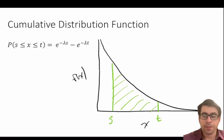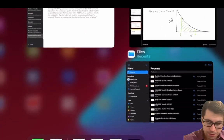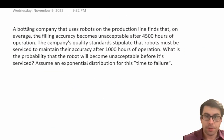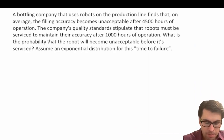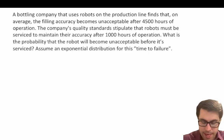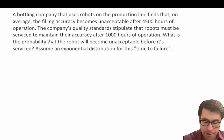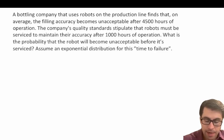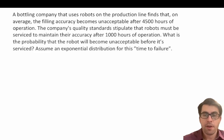The best way to learn is by doing practice problems, so let's dive in. A bottling company that uses robots on the production line finds that, on average, the filling accuracy becomes unacceptable after 4,500 hours of operation. The company quality standards stipulate the robots must be serviced after 1,000 hours of operation. What is the probability that the robot will become unacceptable before it is serviced? Assume an exponential distribution for this time to failure.